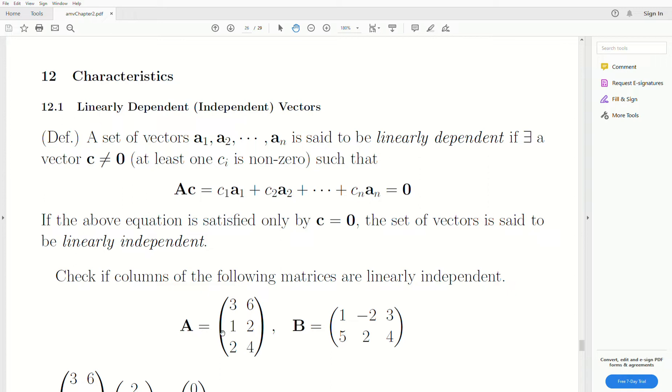So we have two matrices here, A and B, and we want to find are the columns linearly independent or dependent. Now this first one is, I think, kind of easy. If you take the first column times two, it equals the second column. So the second column is a linear combination of the first column. It's times two. So these vectors are dependent.